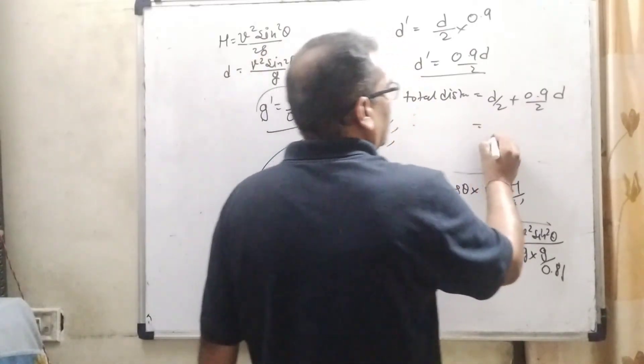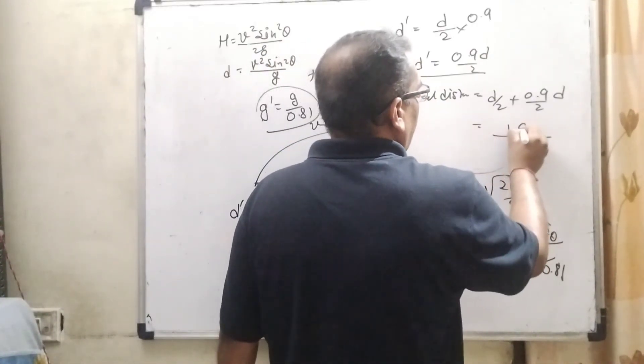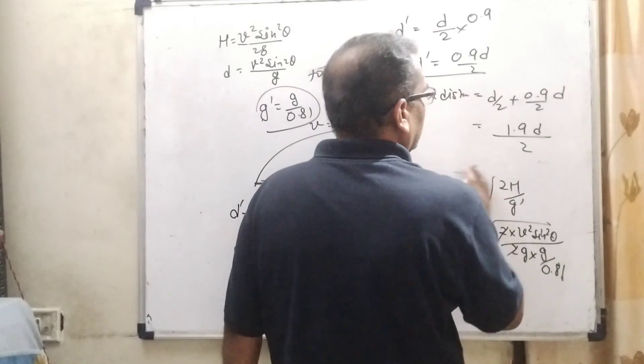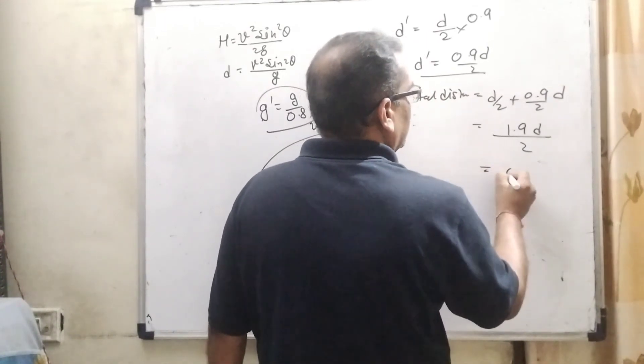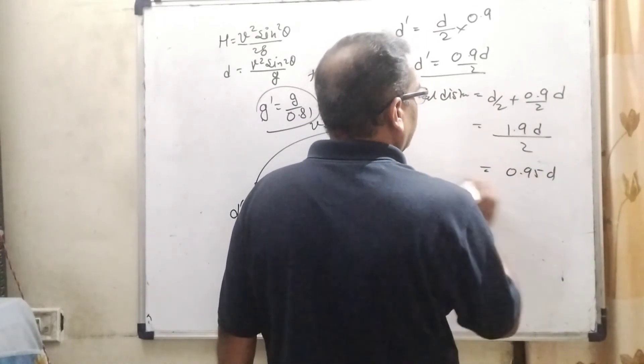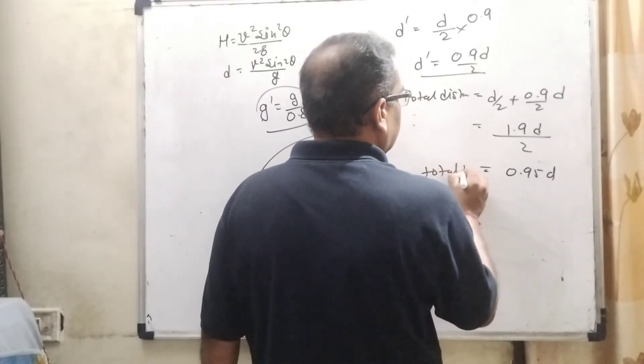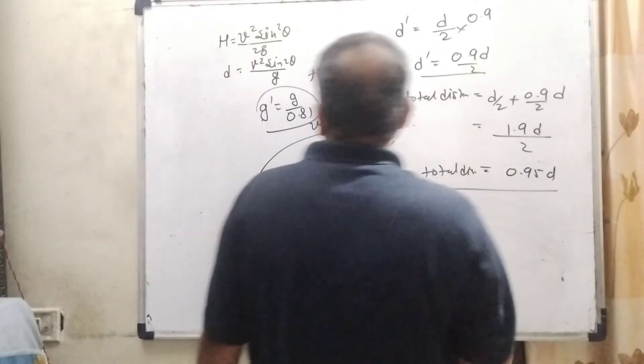Then solving, we get 1.9 D by 2, which is 0.95 D total distance.